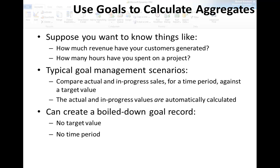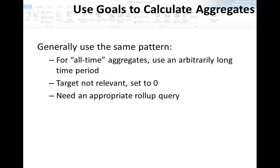What we can do is create a really boiled-down simple goal record — effectively one with no real target value or time period — but still exploit the automatic calculation of the actual value. The approach I'll show you is pretty general and uses essentially the same pattern to calculate all-time aggregates. We'll use an arbitrarily long time period for the goal, effectively removing start and stop dates as a binding constraint. If we don't care about comparing to a target value, we'll just set that to zero and focus on the aggregate we want calculated. Finally, we'll usually need a rollup query, so this is a good example of how to use one. Let's dive into the demo.